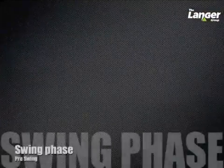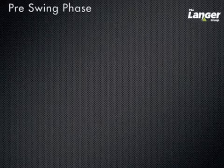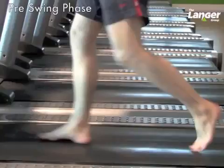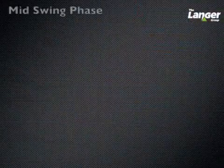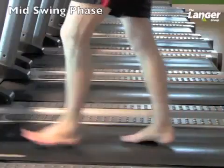The swing phase begins with toe off and ends just before the foot makes contact with the ground again and a new gait cycle starts. This phase is further subdivided into pre-swing, mid-swing and terminal swing phase, and each subsection of the swing phase is associated with certain joint positions of the hip, knee and ankle.